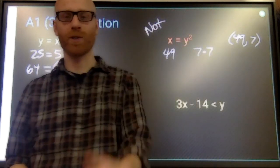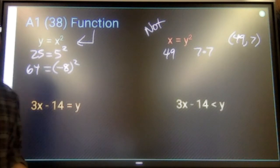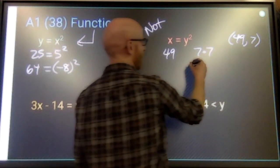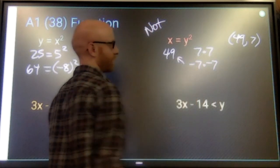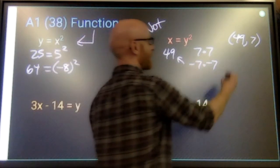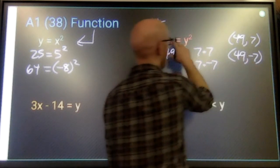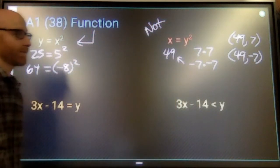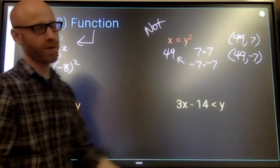But if I told you that that's not the only thing that y could be, I don't think it would take you too much longer to remember that negative 7 times negative 7 also gives me positive 49. So this also is an answer that satisfies that equation. And because one x value can go to two different y values, it's not functional.